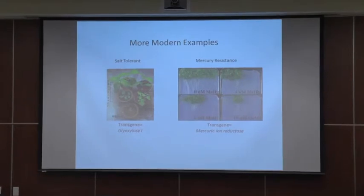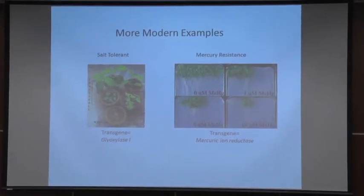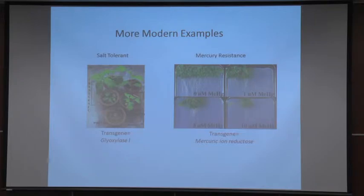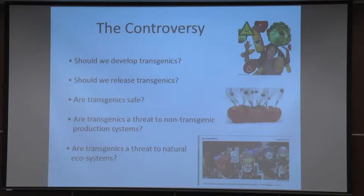More modern examples include salt-tolerant and mercury-resistant plants. If you have an environmentally degraded area with heavy salinization, this technology provides the tool to develop plants that are salt-tolerant or can even grow in mercury-prone areas. The controversy around transgenics raises important questions: Should we develop transgenics? Should we release them? Are they safe? Are they a threat to non-transgenic production systems or natural ecosystems?